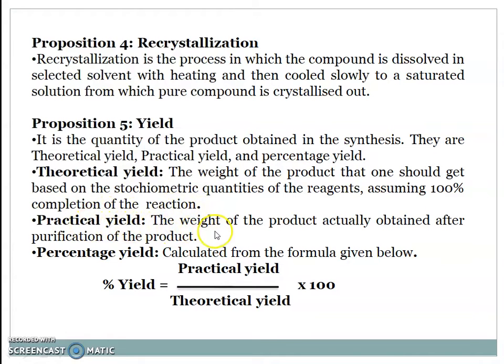Practical yield: the weight of the product actually obtained after purification of the product. And percentage yield, which is calculated from the formula given below. Percent yield equals practical yield divided by theoretical yield times 100.